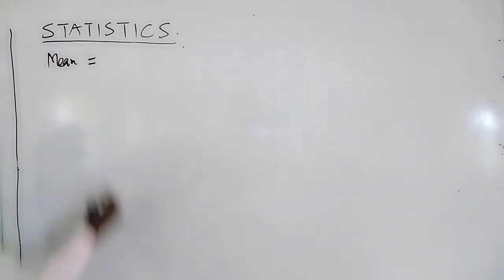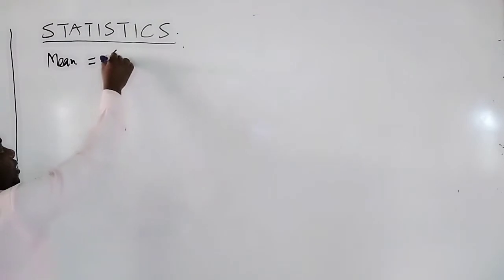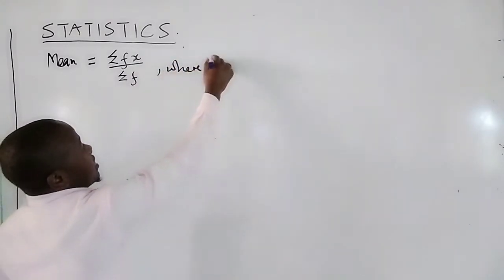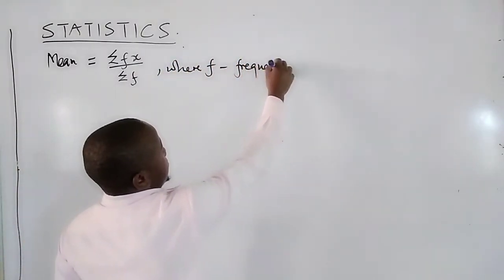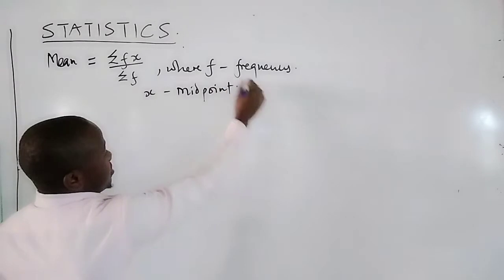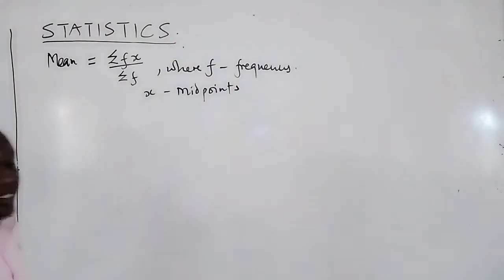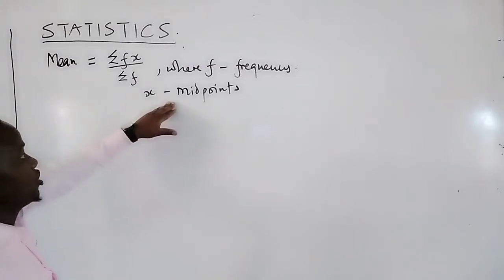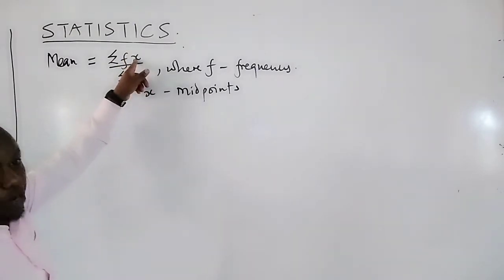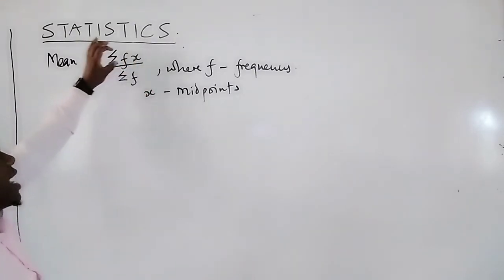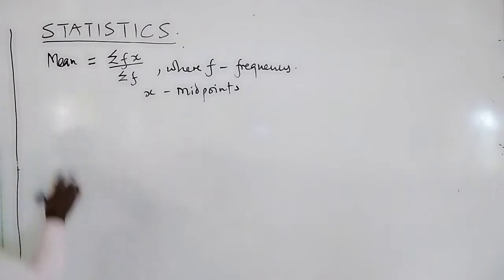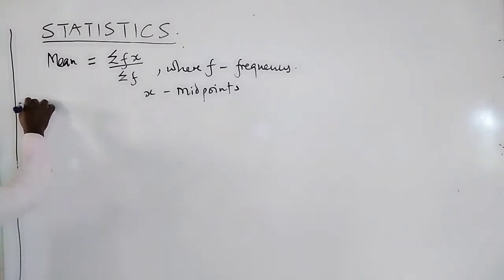For grouped data, to calculate mean we need to get the sum of fx divided by the sum of f. In this case f is frequency, and x is the midpoint — the midpoint for the different classes. We take a column for the midpoint, multiply it with f to get the product of frequency and the corresponding midpoint for that class, then add up the fx values and all the frequencies. Dividing gives us the mean.